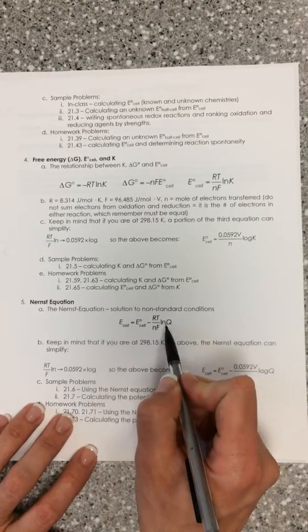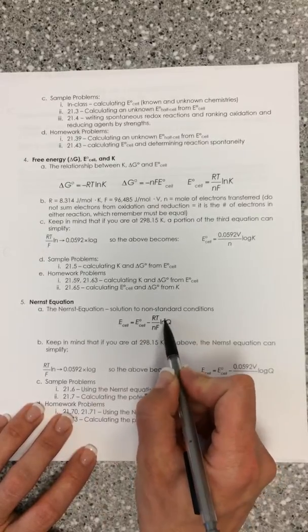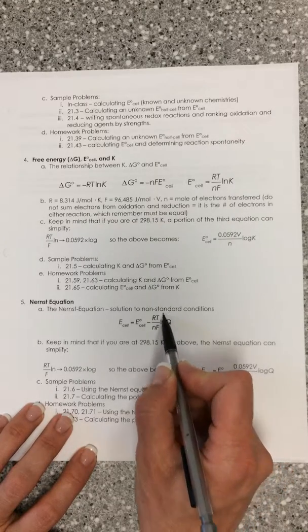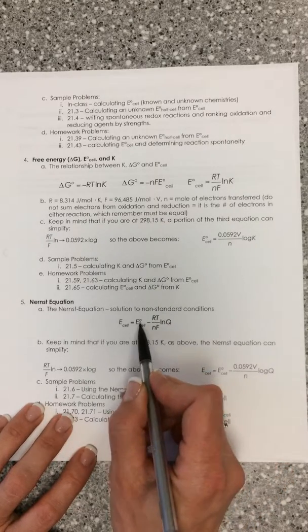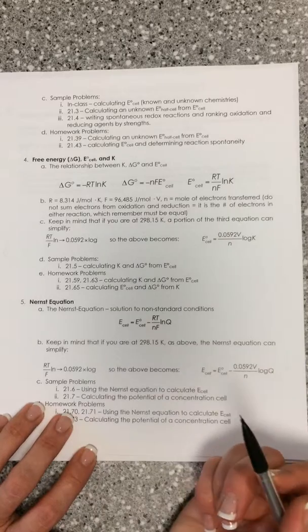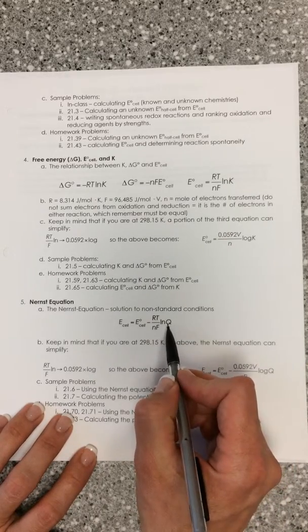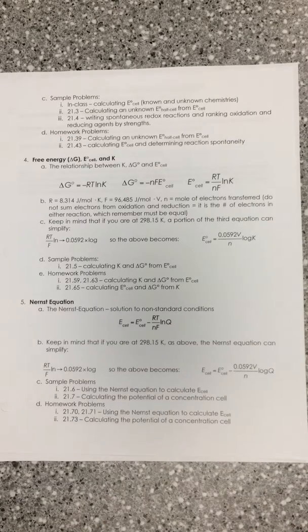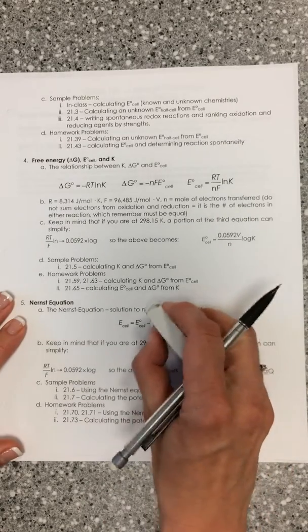We're going to figure out where Q is. If Q equals one, that means this whole term is zero, which means E naught and E cell are equal to one another. And if Q equals one, that means all of our reagents must be at concentrations that are standard one molar or one atmosphere.